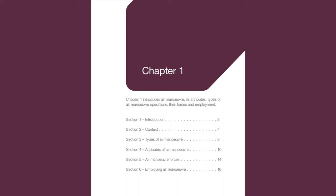During the Battle of Oudna, Tunisia, in November-December 1942, 2 Para were dropped dozens of miles behind enemy lines as the Allies advanced. The ground operation was cancelled and the battalion was effectively abandoned by the chain of command. After a fortnight evading a German-armoured pursuit, it regained the front line, having lost over 260 officers and men from a force of 560.